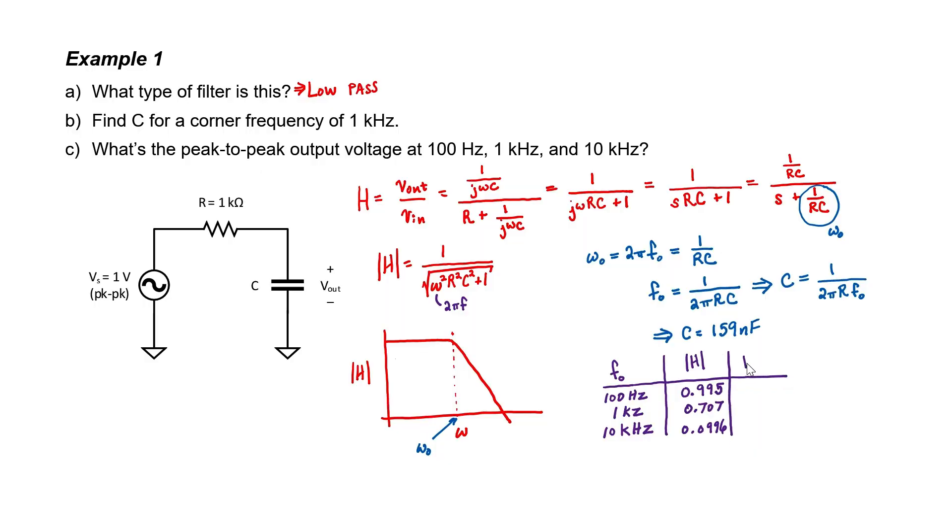What we notice here is that right at the corner frequency, the output voltage is 1 divided by square root of 2 times the input voltage. You might recognize that 0.707 as 1 divided by the square root of 2. That's significant because power is related to the square of the voltage. So at the corner frequency, half of the power is getting through the circuit.